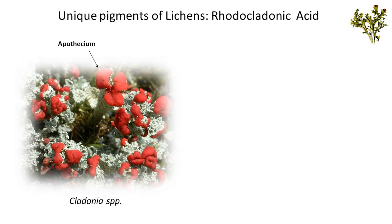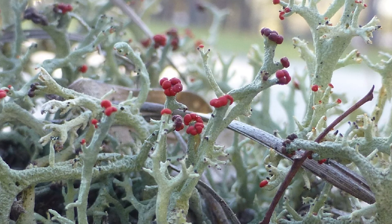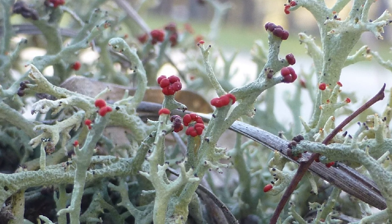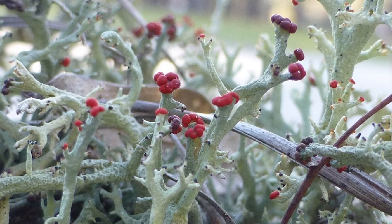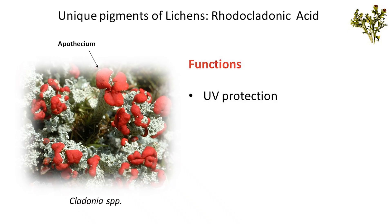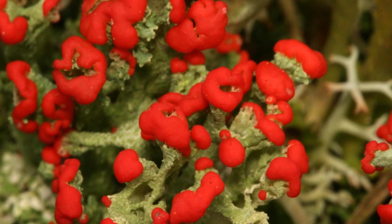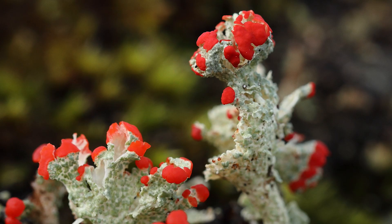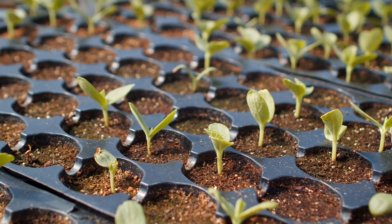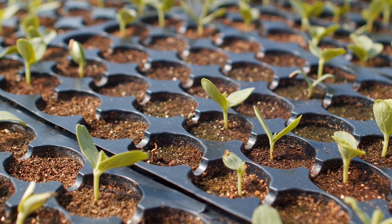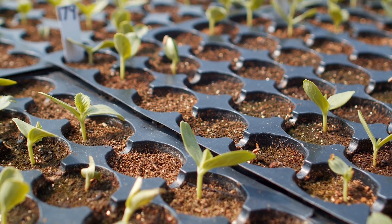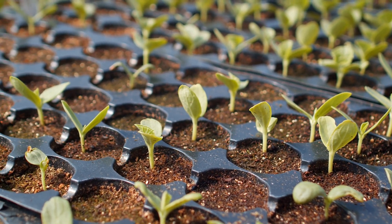Rhodocladonic acid is a distinctive pigment found in several lichen species, particularly within the genus Cladonia. It is notably present in species such as Cladonia leporina and Cladonia salmonia, which exhibit red or pinkish apothecia. This pigment serves multiple ecological functions, providing UV protection and possessing antimicrobial properties. These functions help protect the lichen from environmental stressors and potential pathogens, contributing to its survival and ecological success. Additionally, one study mentions the impact of rhodocladonic acid analogues on seedling germination and root development, highlighting its potential bioactivity beyond its ecological role in lichens.